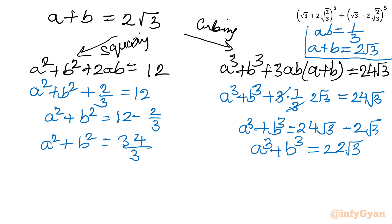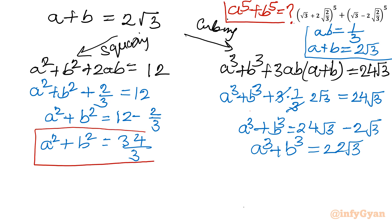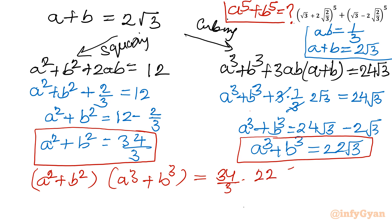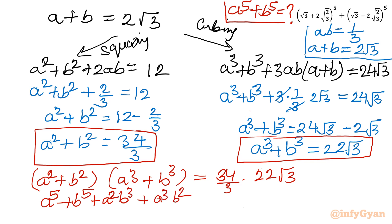Now our target is to find a⁵ + b⁵. I will multiply the sum-of-squares equation by the sum-of-cubes equation: (a² + b²)(a³ + b³) = (34/3)(22√3). Expanding the left side: a⁵ + b⁵ + a²b³ + a³b² = (34 × 22√3)/3.